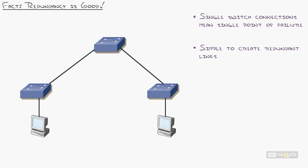What we need to do is use spanning tree. The beauty is we can have redundancy as long as spanning tree jumps in — it blocks the redundant link but watches all other links to make sure they're functioning. Spanning tree works by picking a root bridge. By default, the switch with the lowest priority wins. All switches out of the box have a priority of 32,768.